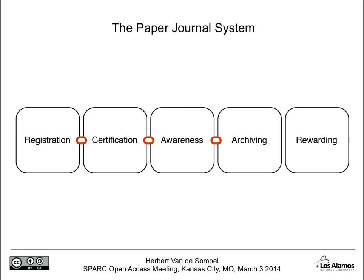When you look at the paper journal system, you observe that most of these functions were fulfilled in a vertically integrated way. One would register a manuscript with a journal; the journal would take care of peer reviewing it, which was the certification function; then the journal would find its way into libraries where people would consult it, and it would also be archived there. The rewarding function was based on the impact factor, derived from counting citations in journals.